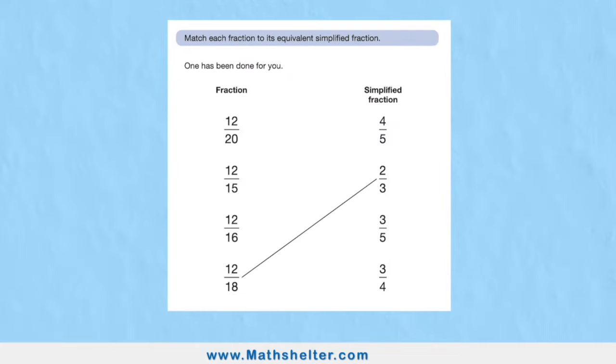Let's jump to question two. Question two says match each fraction to its equivalent simplified fraction. Equivalent just means the same, simplified means its simplest form, the smallest numbers representing that fraction. One has been done for you, that's very kind of them.